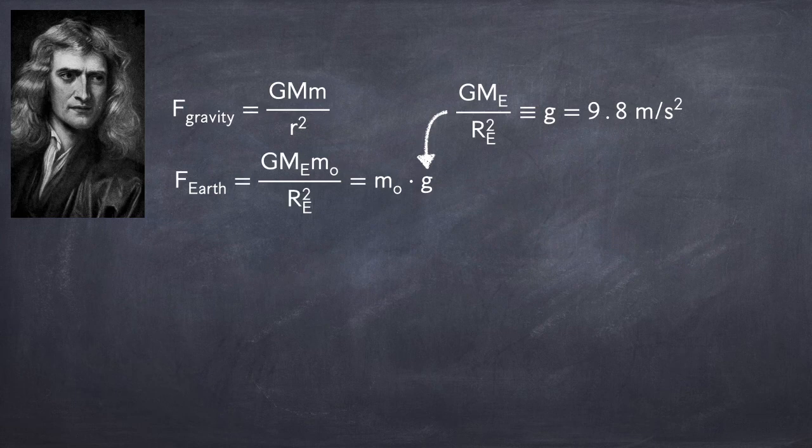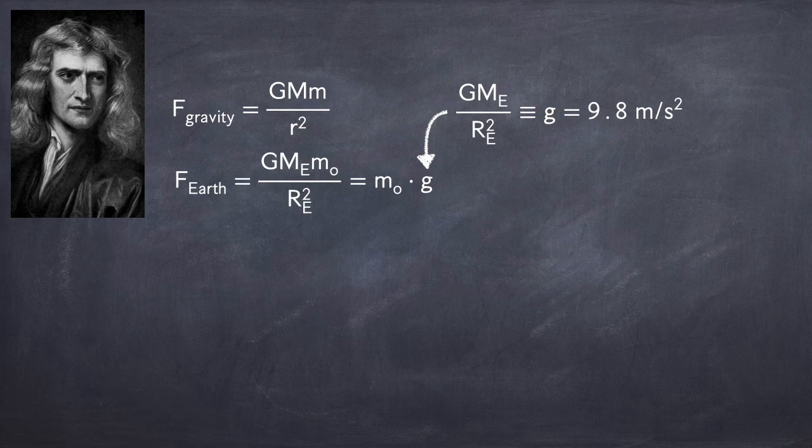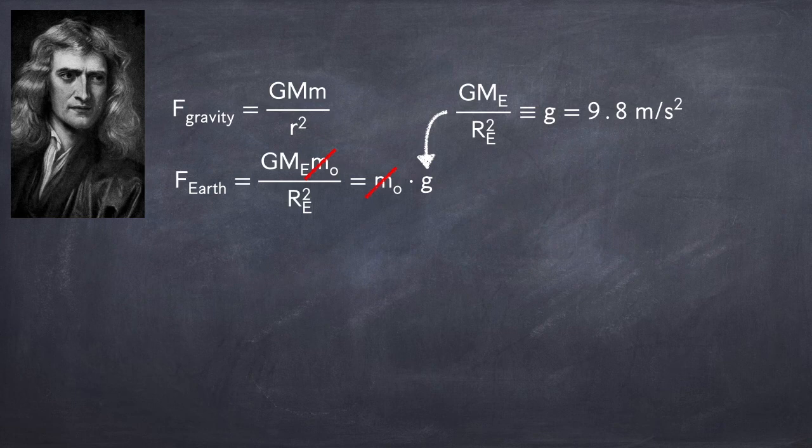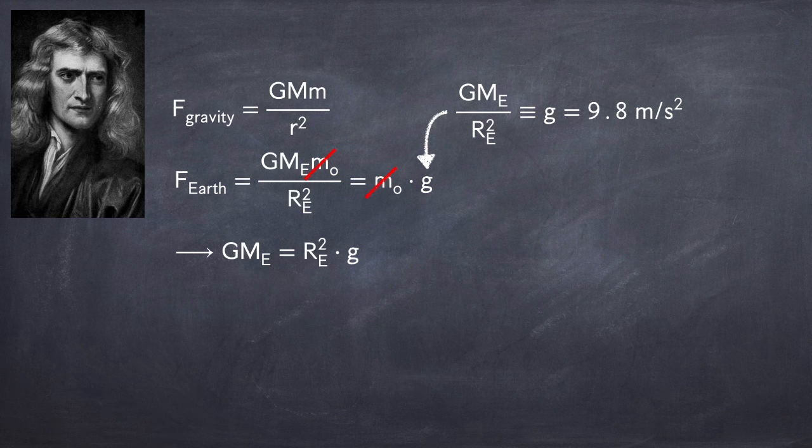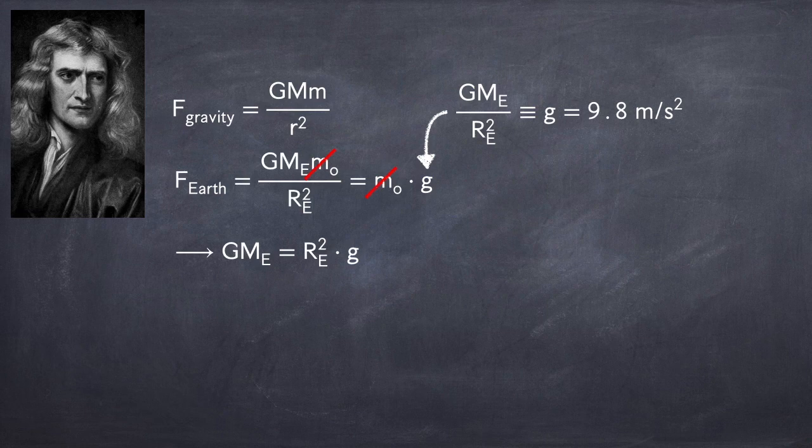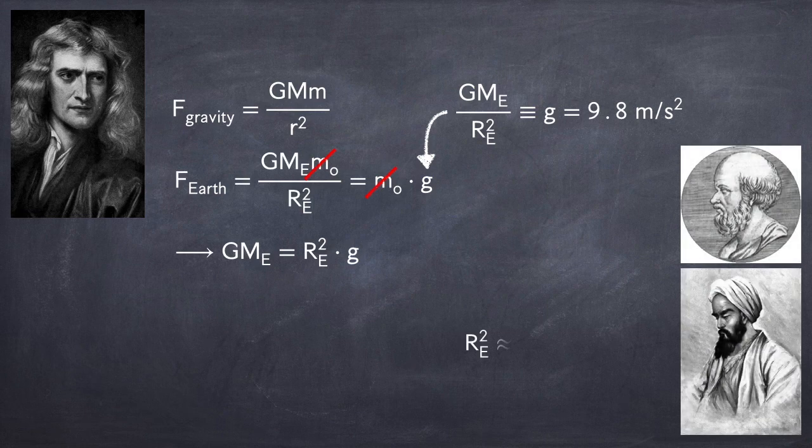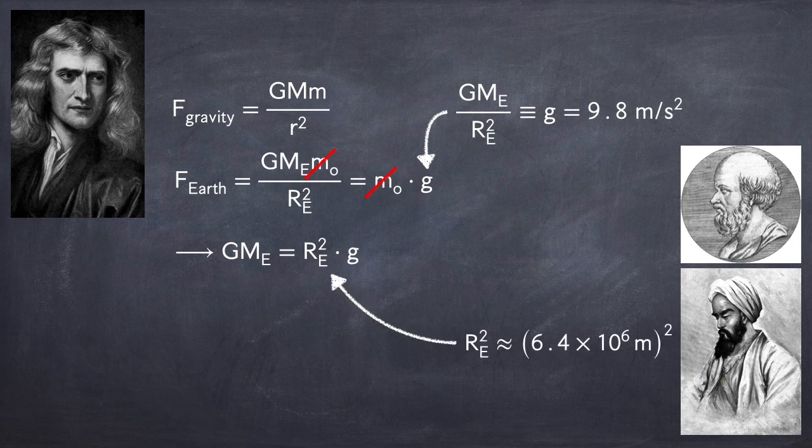Now notice that both sides of the equation have the mass of the object, so they can divide out. And if we now multiply by the radius of the Earth squared, we get that the product capital G times the mass of the Earth equals the radius of the Earth squared times little g. Now, the radius of the Earth was already known at this time, and if you want to know how that was measured, I have two videos explaining two separate methods, one by Eratosthenes and one by Albiruni. And so it was already known that the radius of the Earth was about 6.4 million meters.